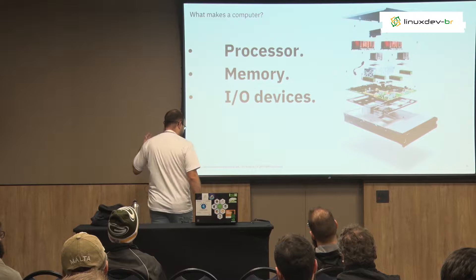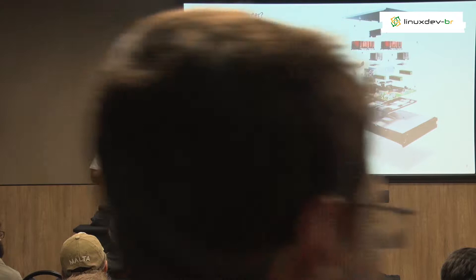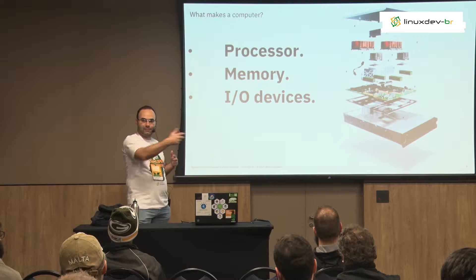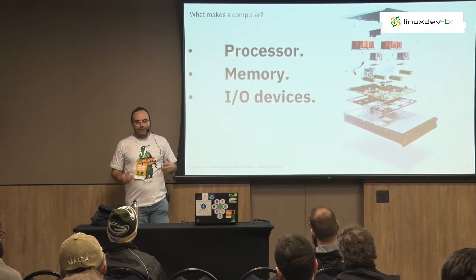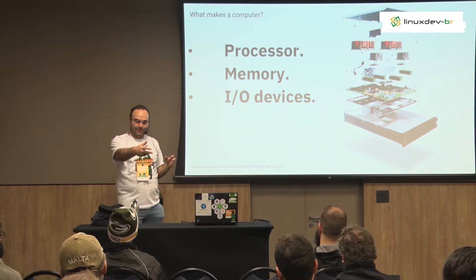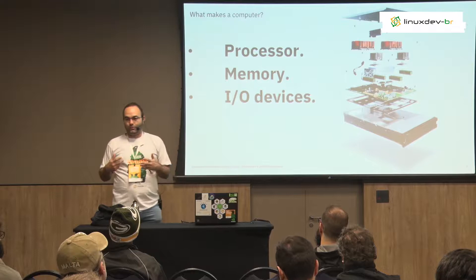What makes a computer? Usually a computer is just a machine that accesses memory, something is processed at that memory position, and you put the data back. It's about exchanging and changing data. What changes the data is usually the processor. You have the memory, of course, but you also have to put data into the system and extract data from the system — and we do that through I/O devices. So when you virtualize a machine, you have to virtualize all three parts.